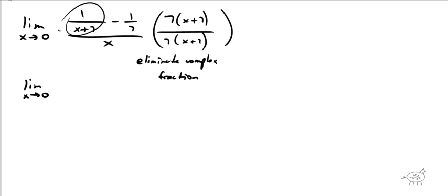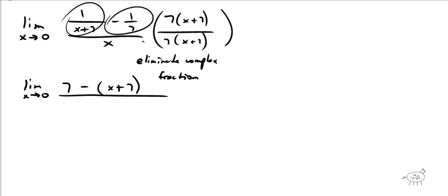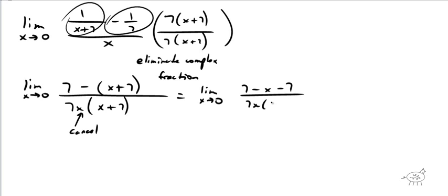If I multiply the first term, the x plus sevens cancel out and I just get seven. Then minus — multiplying the next term, the sevens cancel out and I get x plus seven. On the bottom I'm going to get seven x times x plus seven. Don't distribute on the bottom — if you distribute you're going to make it much more difficult and you'd have to factor anyway. Our goal is to get that x to cancel. So on top we have seven minus x minus seven over seven x times x plus seven.